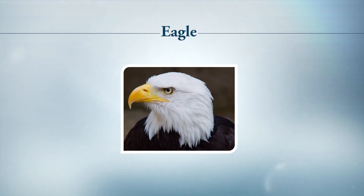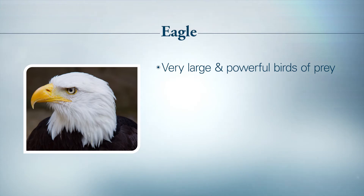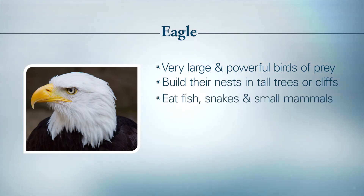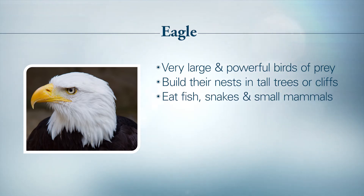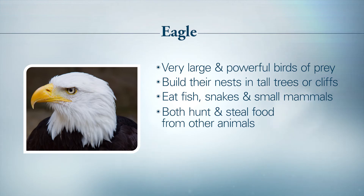The last bird we'll look at today is the eagle. Eagles are very large and powerful birds of prey that build their nests in tall trees or on cliffs. They are ranked at the very top of the food chain, eating fish, snakes, and small mammals like squirrels, raccoons, and rabbits. They will hunt for their own food but will also steal prey from other animals — it is not rare for them to take fish from the talons of other fish-eating birds.